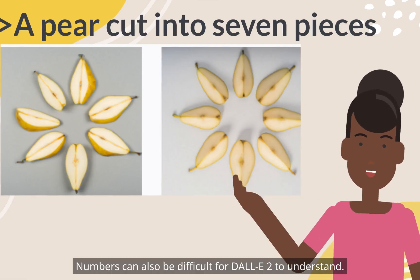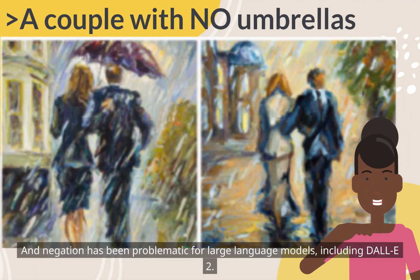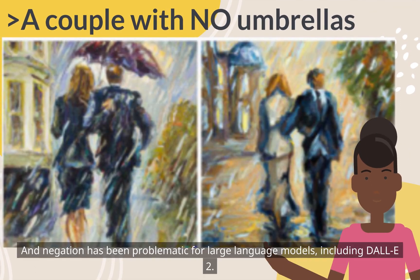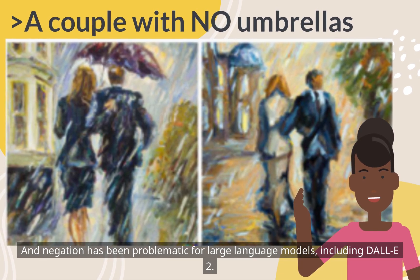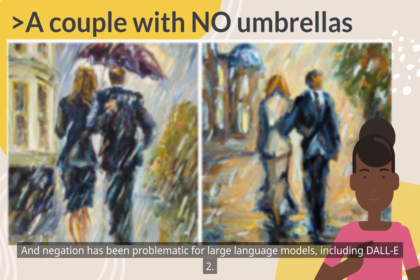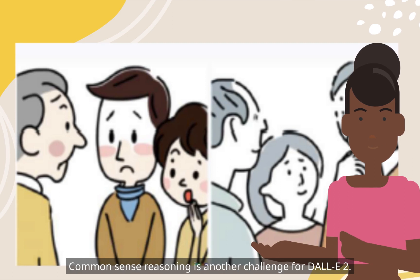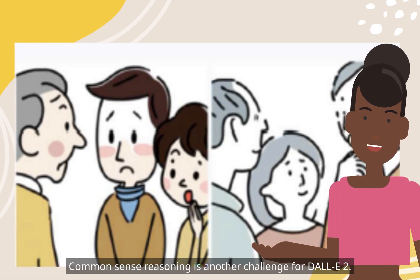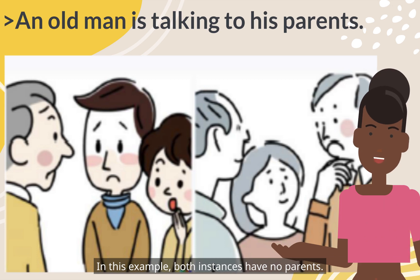Numbers can also be difficult for DALL-E 2 to understand. Negation has been problematic for large language models, including DALL-E 2. Common sense reasoning is another challenge for DALL-E 2. In this example, both instances have no parents.